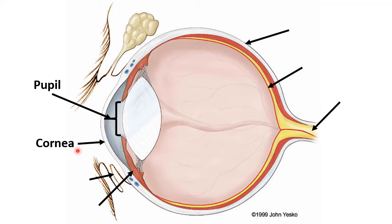Number three is this membrane within the lower eyelid — that is the third eyelid. Number four would be the structure that controls how much the pupil dilates or constricts. That would be the iris.